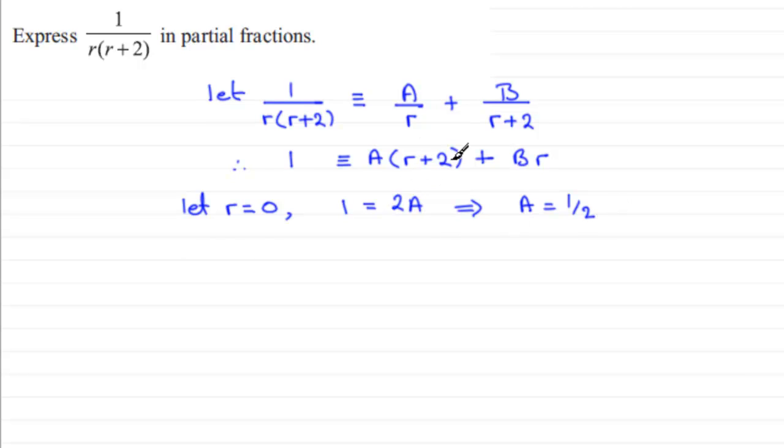We can make this term here 0 by letting this factor be 0 choosing r to equal minus 2. So if we let r equal minus 2 then what we've got again is 1 equals, and this will be 0. But if we have r as minus 2 here we get minus 2B. And if you divide both sides by minus 2 you end up with B equaling minus one half.